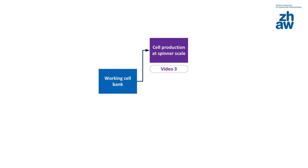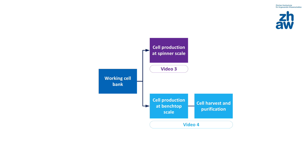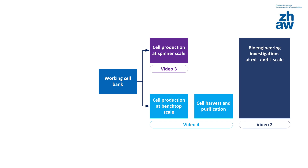Our focus is on cell production at spinner scale, shown in video number three, as well as at benchtop scale, which is described in video number four. In addition, the bioengineering investigations of the stirred cultivation systems chosen — that is, the 125 milliliter Corning spinner and the 2-liter Univessel SU — are explained in video number two.